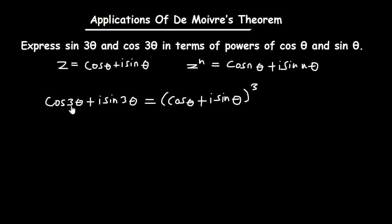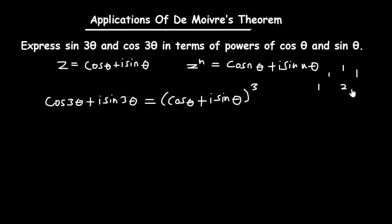We start off by expanding this bracket, which is raised to the power 3, and we are going to use Pascal's triangle. That gives us 1, 1; 1, 2, 1; and 1, 3, 3, 1. I'll take cosine theta to be equal to a, and i sine theta to be equal to b.